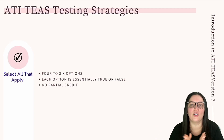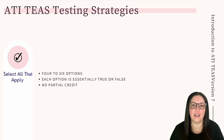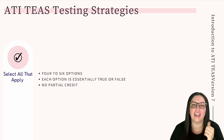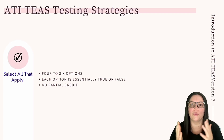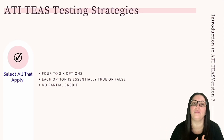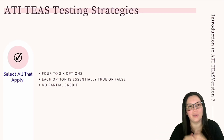Let's begin with our select all that apply questions. These questions will require you to select all that apply from the available choices presented to you. They will be easy to spot as there will be four to six options to choose from. The key is to evaluate if each answer is either true or false. You will need to select all correct options. If you select a wrong answer or miss a correct one, the question is marked incorrect — there is no partial credit.